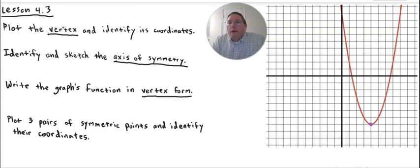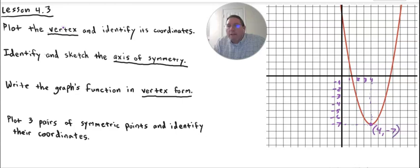Now we need to know the coordinates at that point. Going across: one, two, three, four — so that's an x-coordinate of four. And going down: negative one, negative two, negative three, negative four, negative five, negative six, negative seven. So it looks like the coordinates of this vertex are four and negative seven — the vertex is at (4, −7).